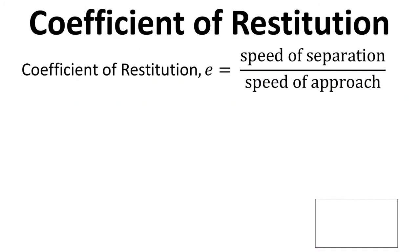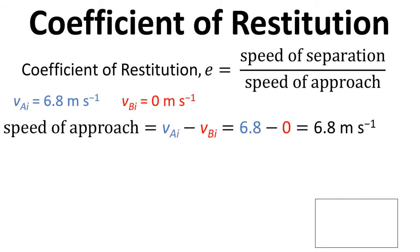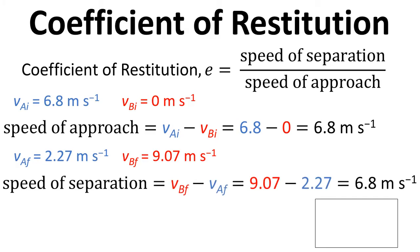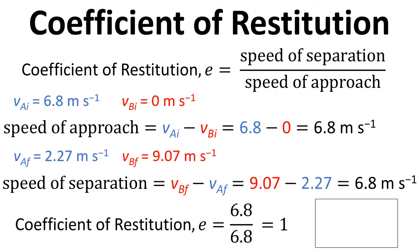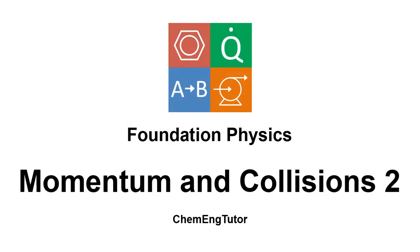What about the coefficient of restitution? Speed of approach is 6.8 minus 0, so 6.8 meters per second. For separation, it's 9.07 minus 2.27, which equals 6.8. So coefficient of restitution is 6.8 divided by 6.8, which equals 1. This is just a sanity check — it always equals 1 for elastic collisions. So that's been a video about some more concepts to do with momentum and collisions.